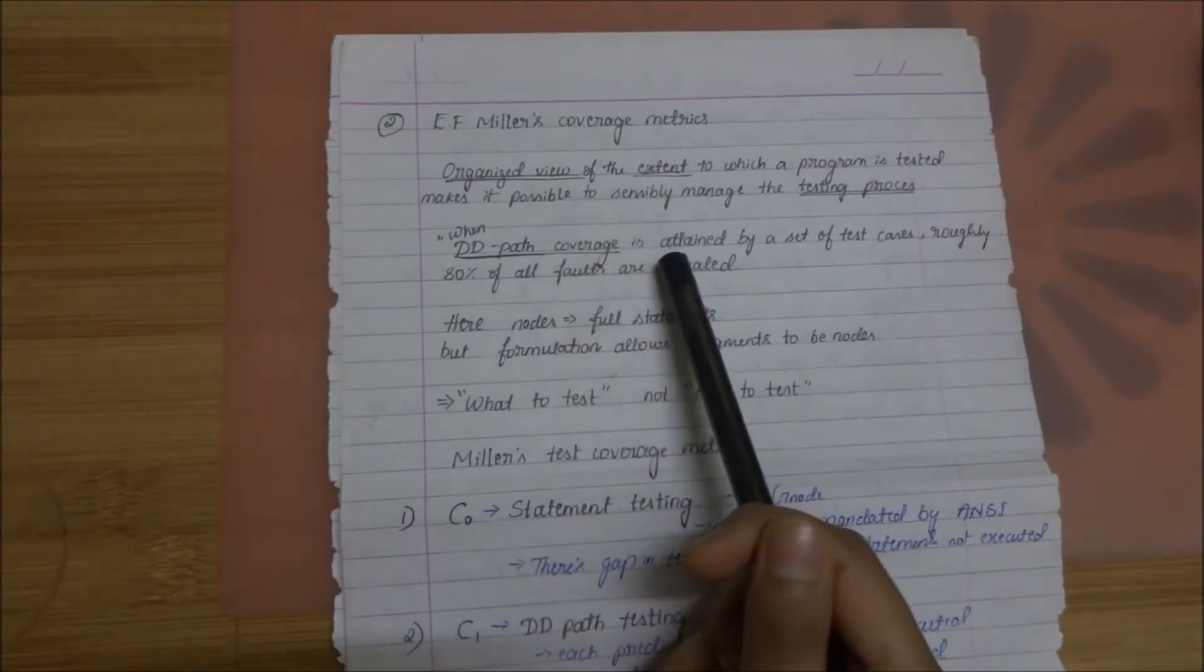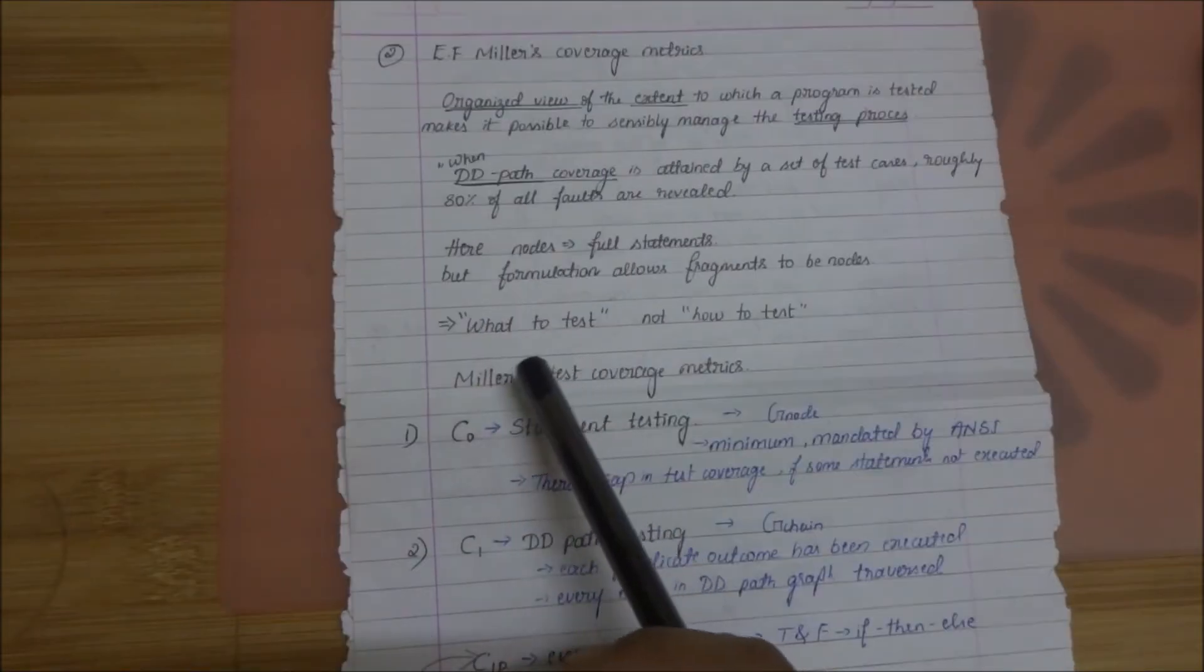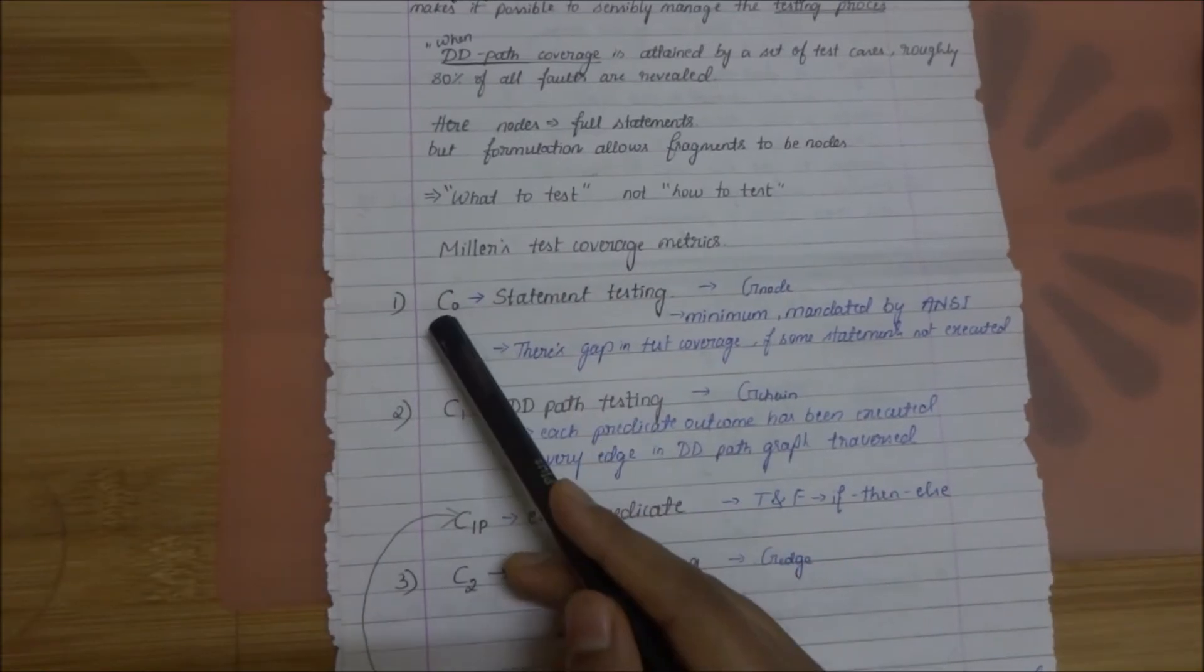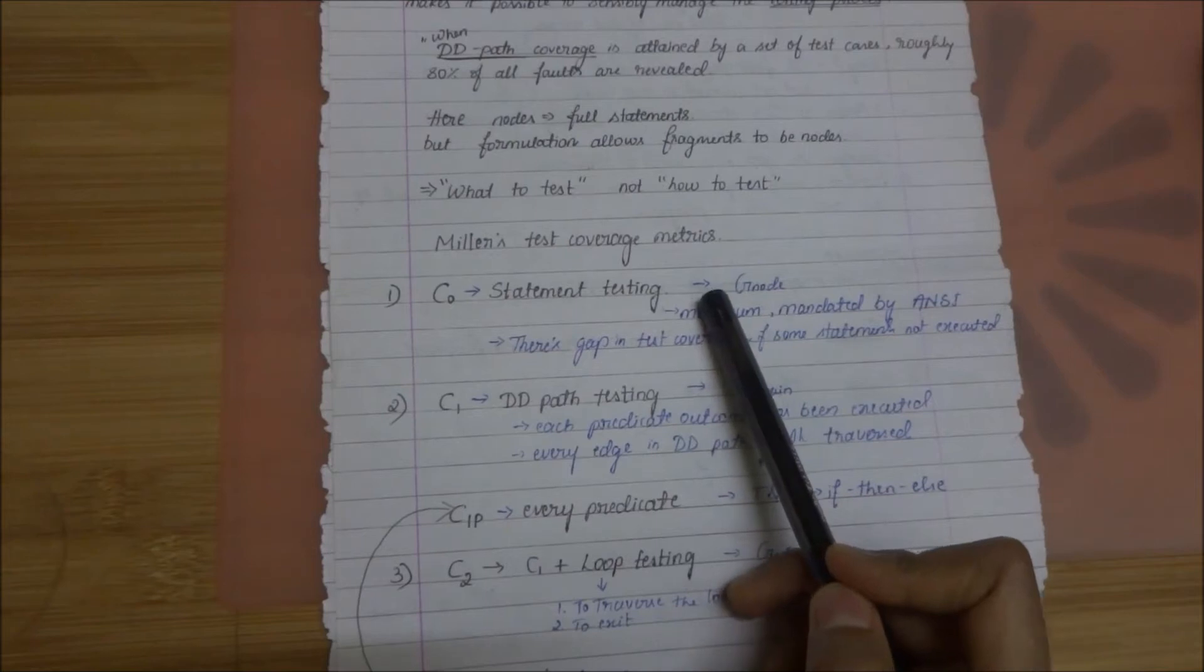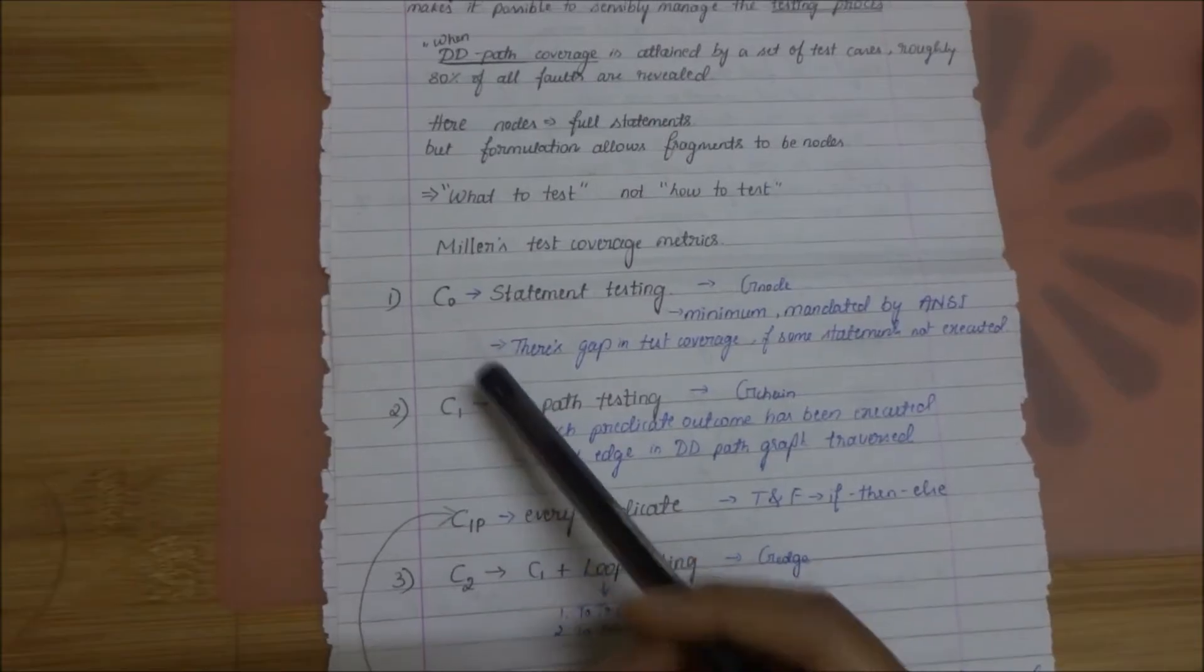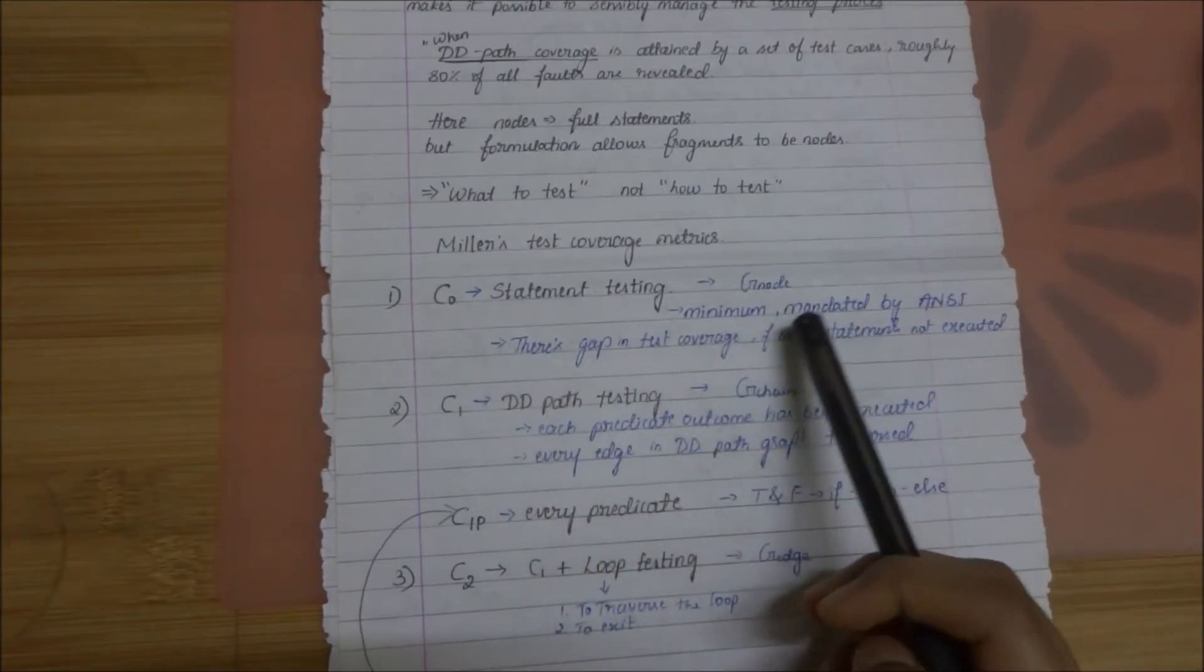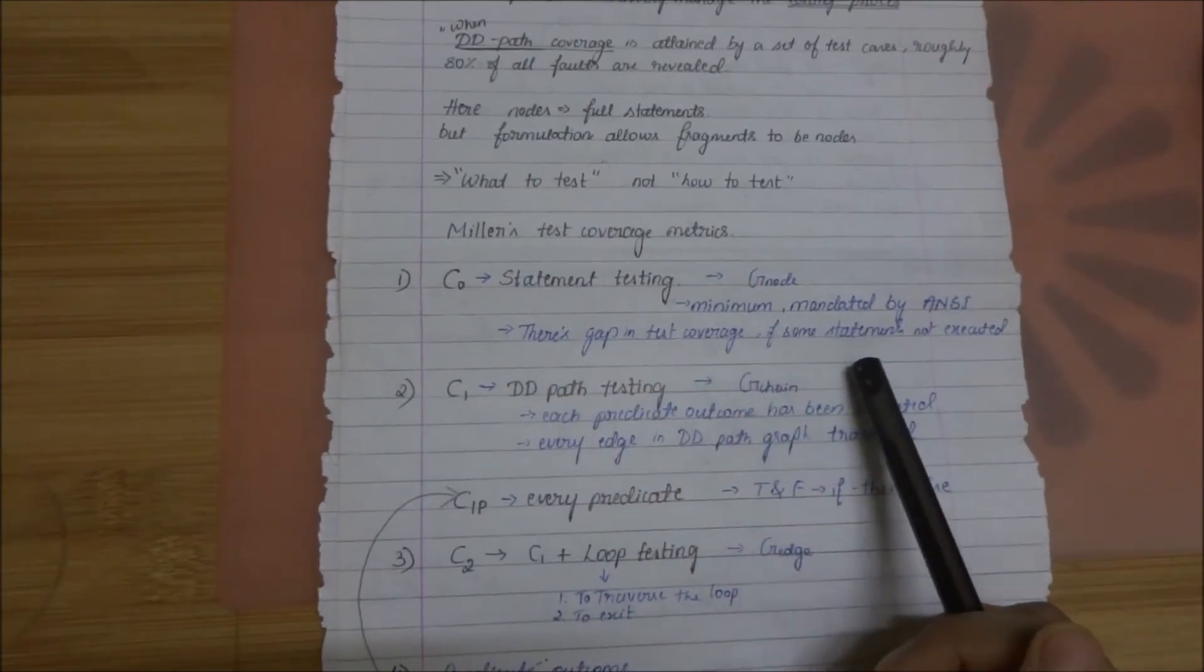In EF Miller's coverage matrix the nodes are full statements. Mainly concentrated about what to test rather than how to test. Let's see the Miller's test coverage matrix one by one. The first one is C-not or C0. This stands for statement testing. You can relate it to the G-node of program graph based testing. C-not matrix is the minimum and it's mandated by ANSI. As I told it's similar to G-node where every node is traversed and tested. So we can tell that there is a gap in the test coverage if some statements are not executed at all.